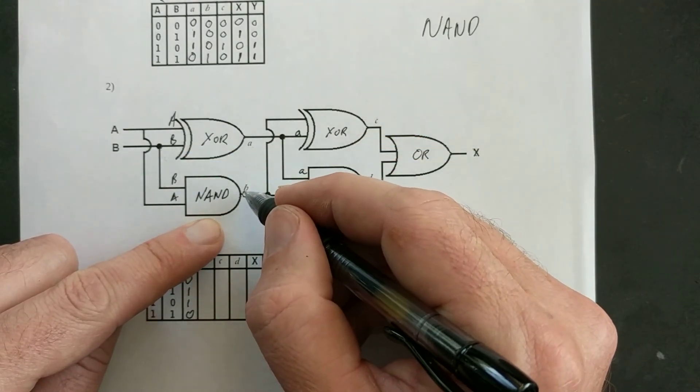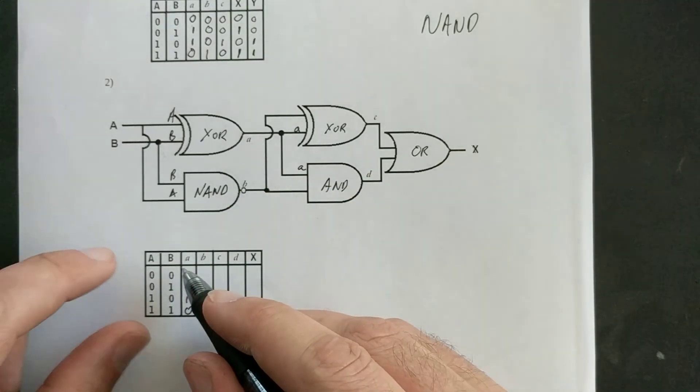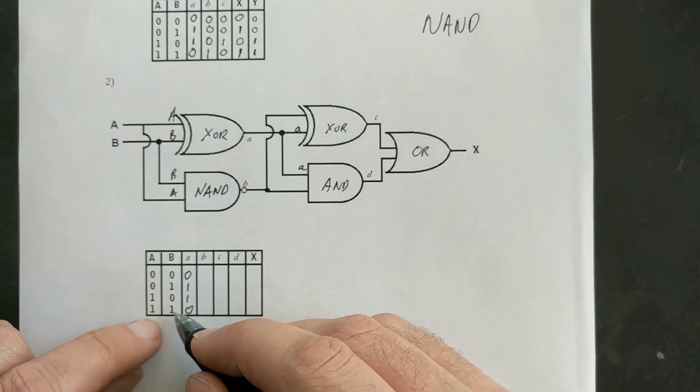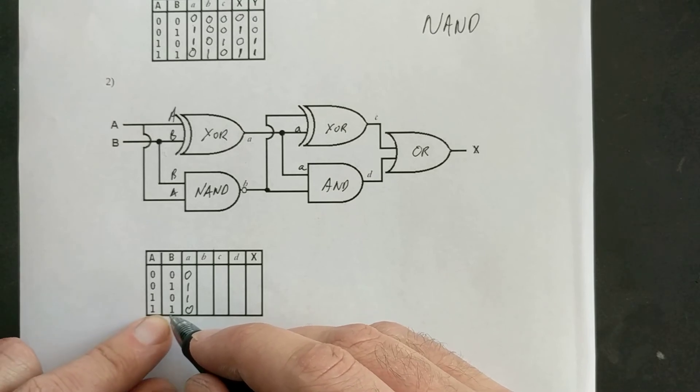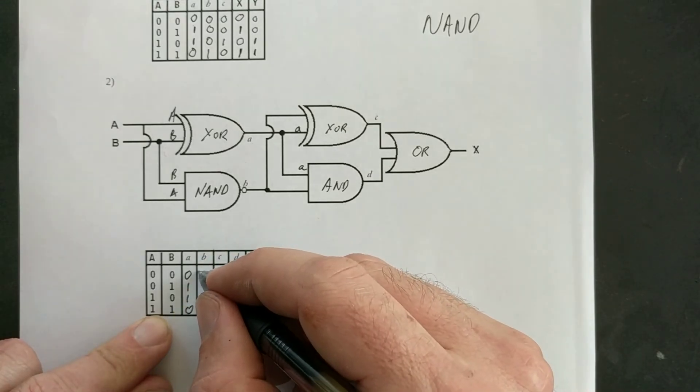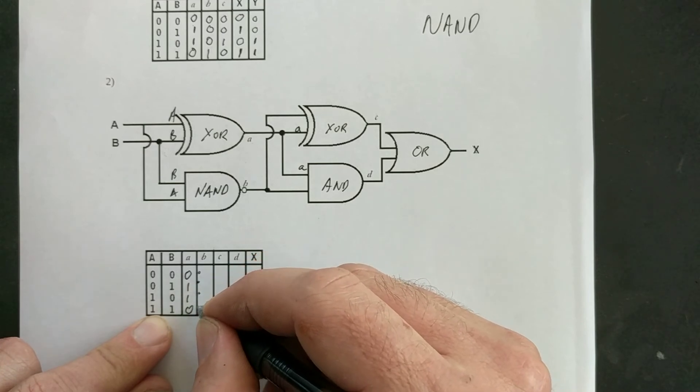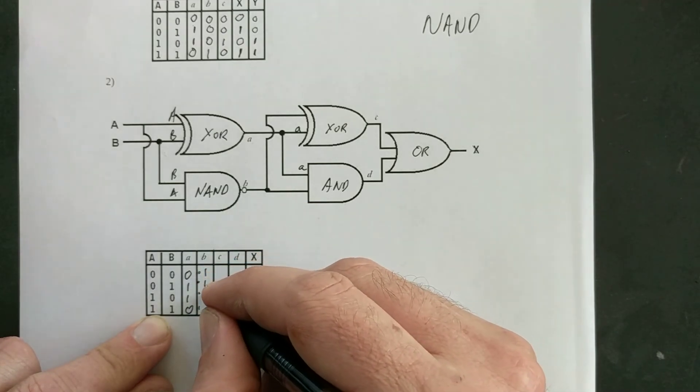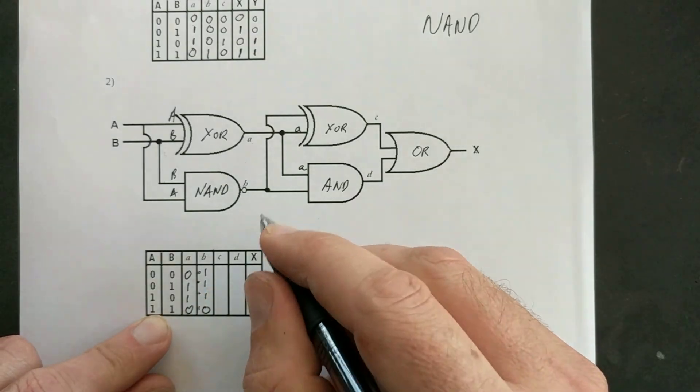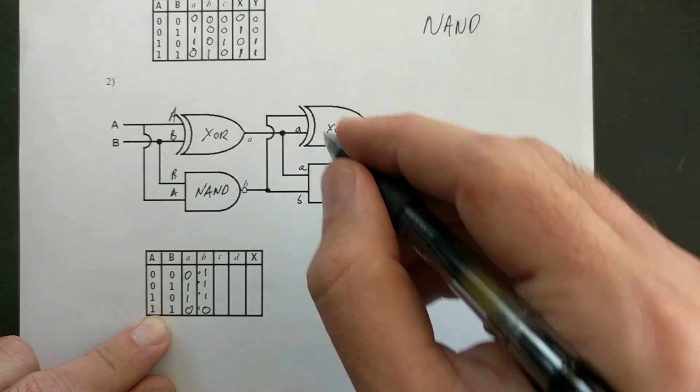Now this is a NAND gate, remember. You can tell from that little bubble here. So, I don't want when they're both ON, I want any time they're NOT both ON, the opposite of an AND. So whereas an AND gate would be 0, 0, 0, 1, a NAND gate will give me 1, 1, 1, 0. Now that B goes into here, and into here.